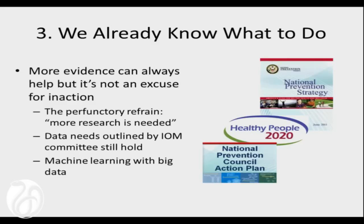More research is needed. The idea mentioned earlier of having a Dartmouth Atlas for population health is a fabulous idea. The IOM committee identified all the challenges — we don't have the raw data sources needed to actually do that correctly, and an investment needs to be made by our society in pulling together that kind of information. There is an opportunity through machine learning and big data sets to get really interesting new insights. In our recent report on the US health disadvantage, we outline lots of interesting unknowns that we need to solve through more science.